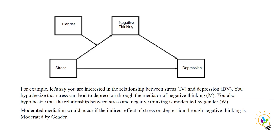For example, let's say you are interested in the relationship between stress and depression. You hypothesize that stress can lead to depression through the mediator of negative thinking. You also hypothesize that the relationship between stress and negative thinking is moderated by gender. Moderated mediation will occur if the indirect effect of stress on depression through negative thinking is moderated by gender. This is called moderated mediation.